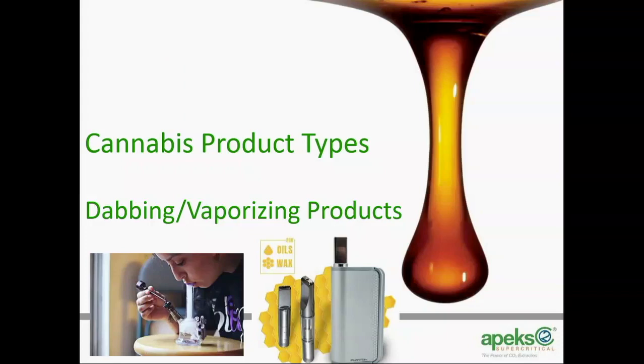Moving on from the oils and infused products, we're going to talk about what we see more in the recreational market: dabbing and vaporizing products. Dabbing involves what looks a lot like a bong. The difference between a bong and a dab rig is primarily that one is designed to smoke plant material and the other is designed to vaporize a concentrated oil or wax. They'll create a hot surface — either an electronic nail, which is a heated element, or a blowtorch on a glass piece — drop the wax element on top, it vaporizes, and you draw it into your lungs.